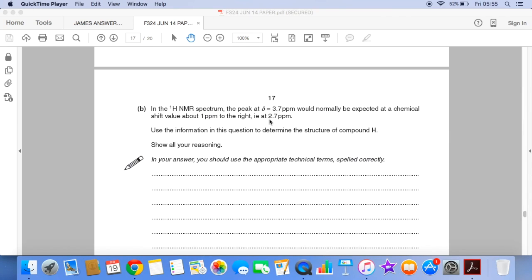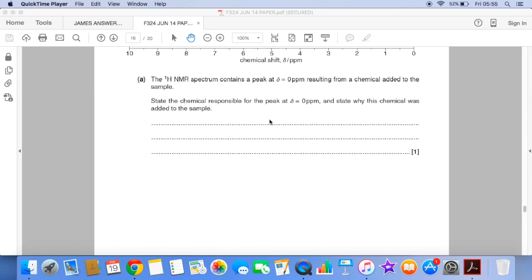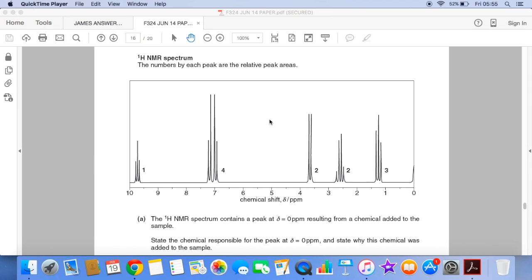So we've got to determine the structure of H and obviously show all our reasoning and we must use the appropriate technical terms spelled correctly. So if I just go back to the spectrum, there it is there. So we've got to use the correct names for these peaks, obviously factor in the areas, the shift values, and just remember this peak at 3.7 should really be at 2.7.